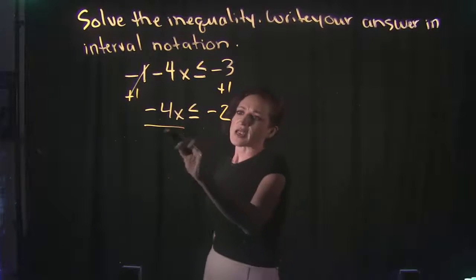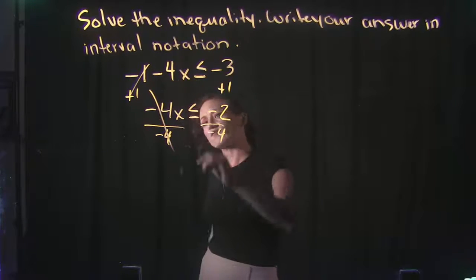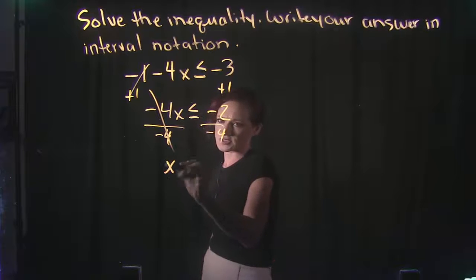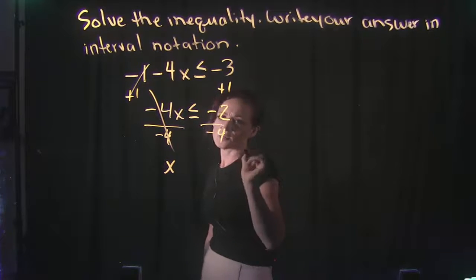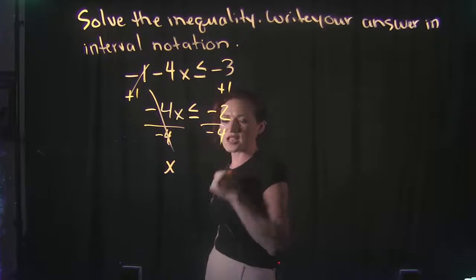Then we're going to divide out the coefficient here. So we're going to divide both sides by negative 4. Negative 4 divided by negative 4 cancels. Then we're dropping down x. And on the right side, negative 2 divided by negative 4. Negative over negative is positive.